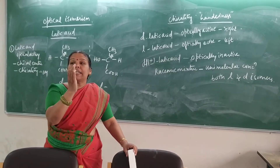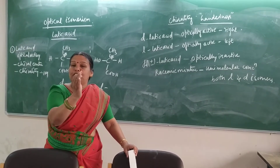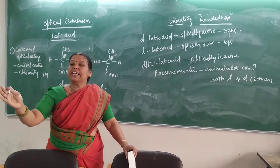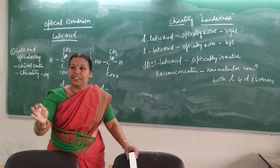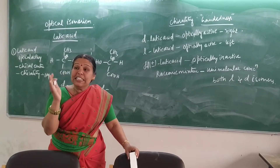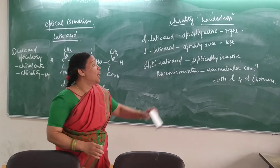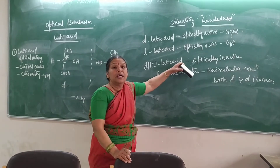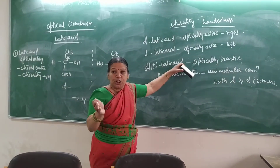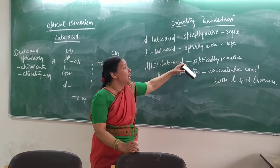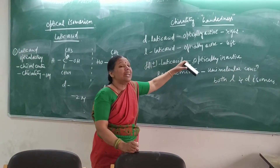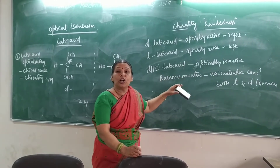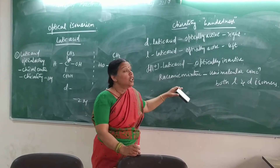For example, L-lactic acid rotates at minus 22 degrees and D-lactic acid rotates at plus 22 degrees, so they cancel each other out. There will be no net angular rotation at all. Therefore they are optically inactive. That form also exists.